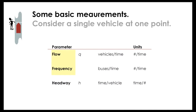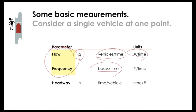A summary of units: flow and frequency are interchangeable — frequency is used in public transport, flow in traffic. Both are represented by Q with units of vehicles per time (i.e., 1/time). Headway is the inverse of flow, with units of time per vehicle, so its unit is simply time.